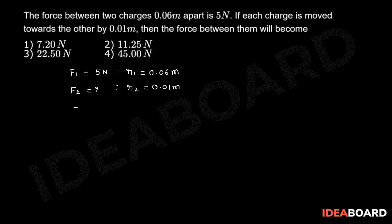From Coulomb's inverse square law we know F is equal to 1 by 4 pi epsilon naught into Q by R square. Therefore F is inversely proportional to R square.